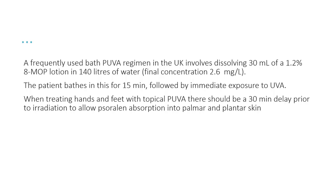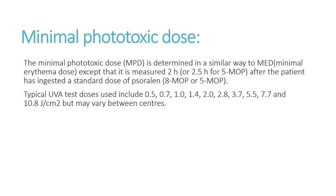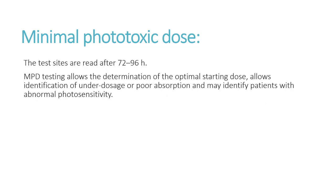When treating hands and feet with topical PUVA, there should be a 30-minute delay prior to irradiation to allow psoralen absorption into palmar and plantar skin. The minimal phototoxic dose (MPD) is determined in a similar way to the minimal erythema dose, except it is measured 2, 2.5, or 4 hours after the patient has ingested a standard dose of psoralen. Typical UVA test doses include 0.5, 0.7, 1, 1.4, 2, 2.8, 3.7, 5.5, 7.7, and 10.8 J/cm², but may vary between centers. Test sites are read after 72 to 96 hours. MPD testing allows more accurate determination of the optimal starting dose, identifies under-dosage or poor absorption, and may identify patients with abnormal photosensitivity.